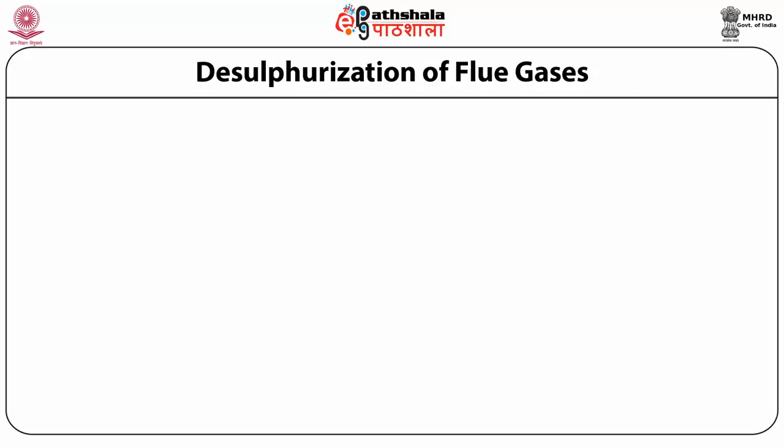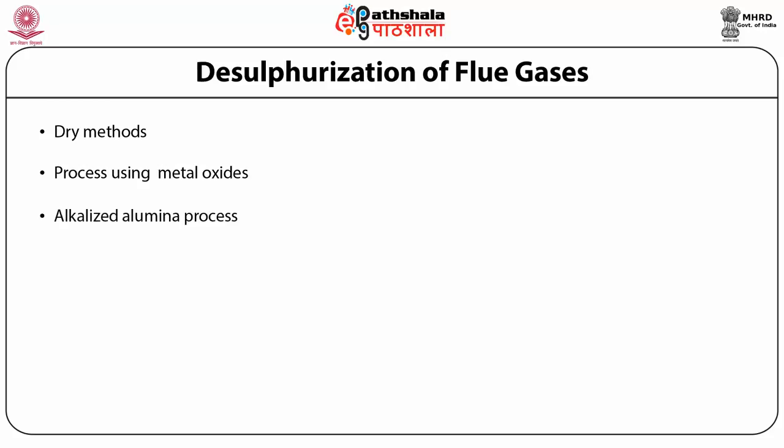Desulfurization of flue gases by dry method can be classified as adsorption of sulfur dioxide by metal oxides to form stable sulfides, and absorption on activated carbon. The process using metal oxides is further classified into the alkalized alumina process, which is a cyclic adsorption process, and the manganese oxide process, where activated manganese oxide is used as the adsorbent.